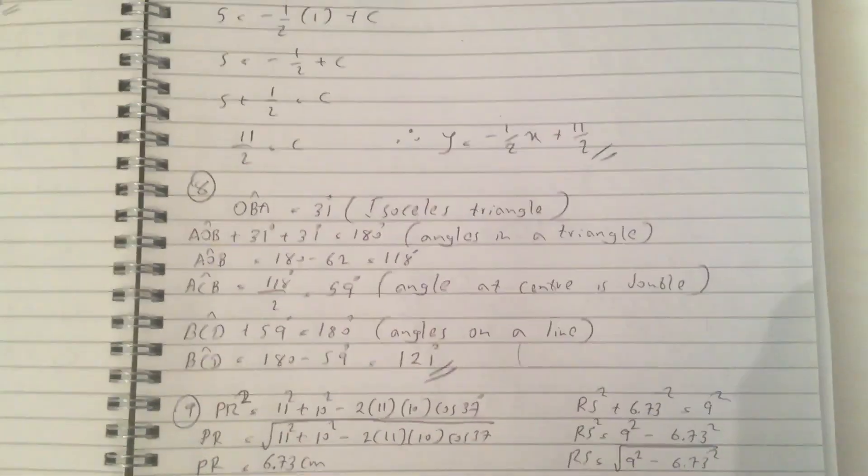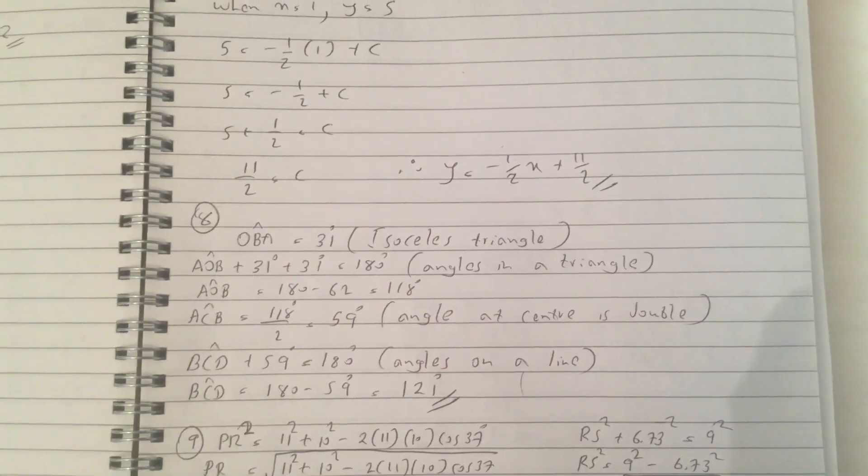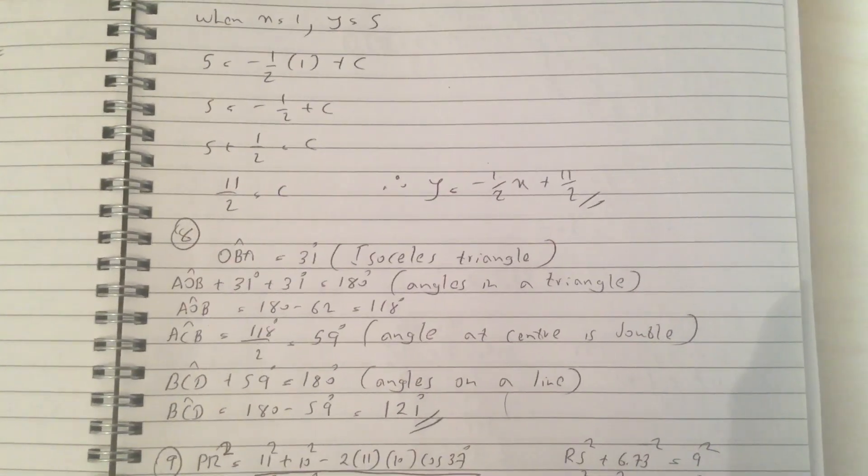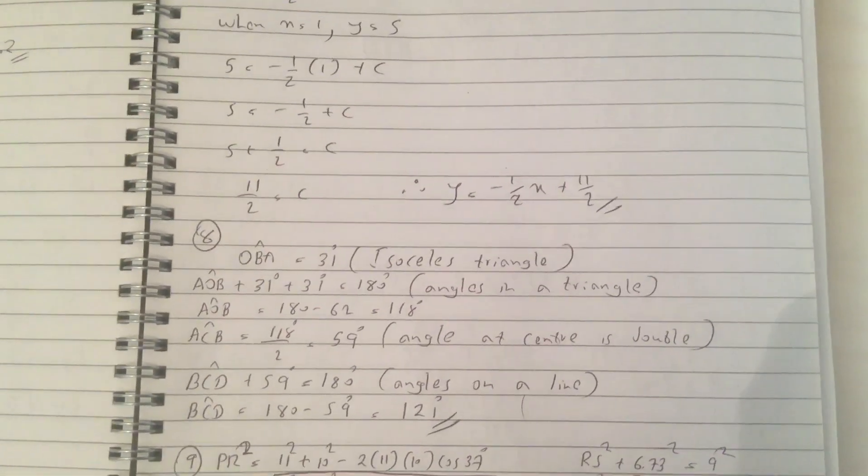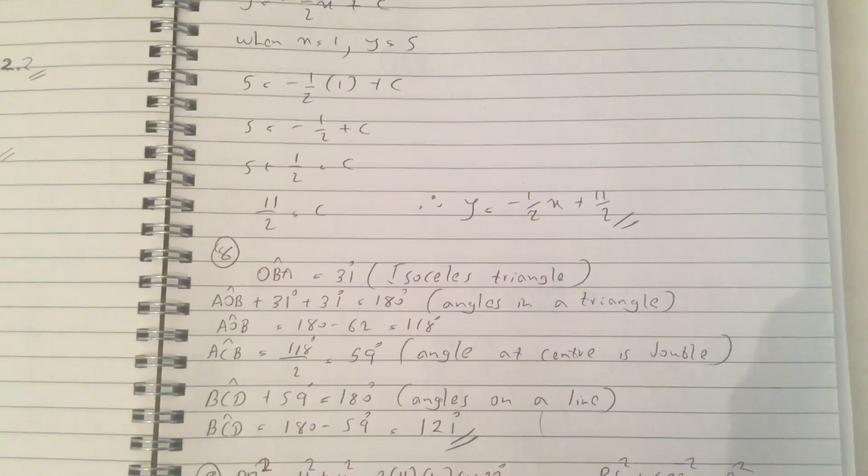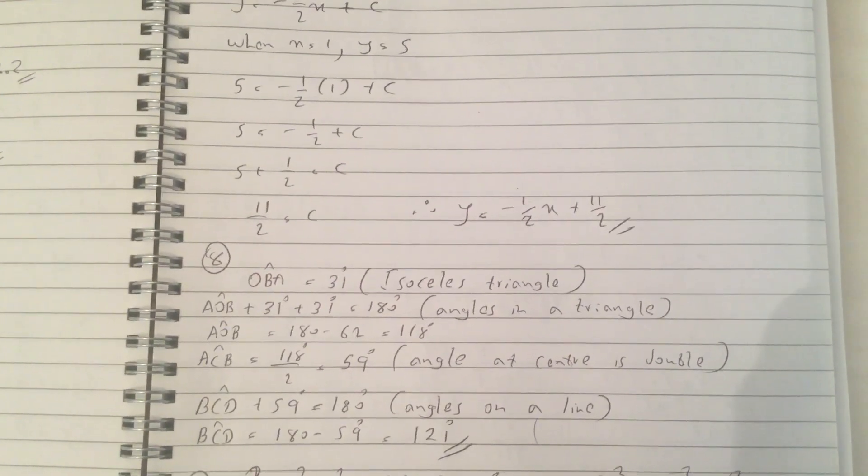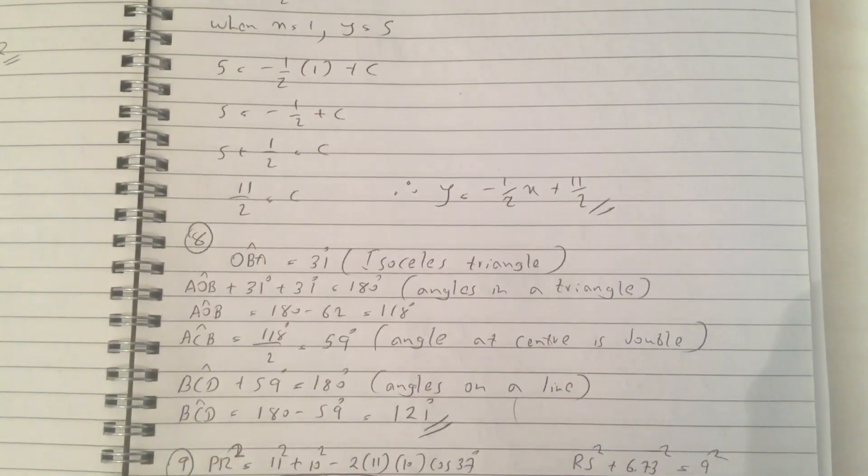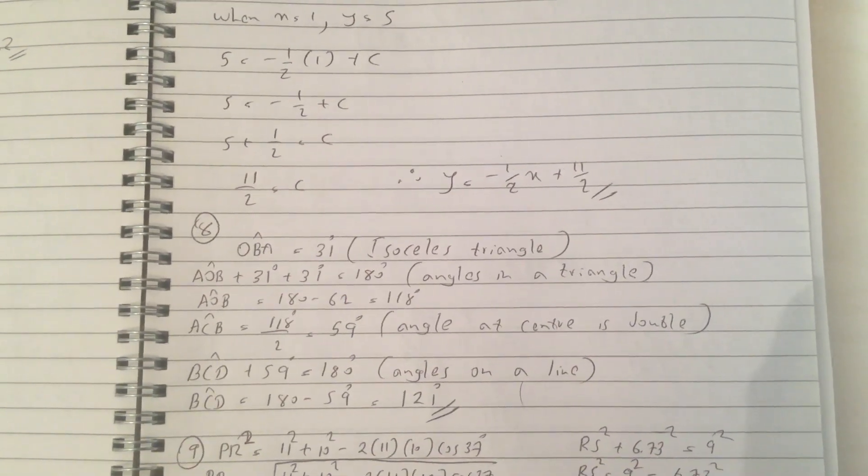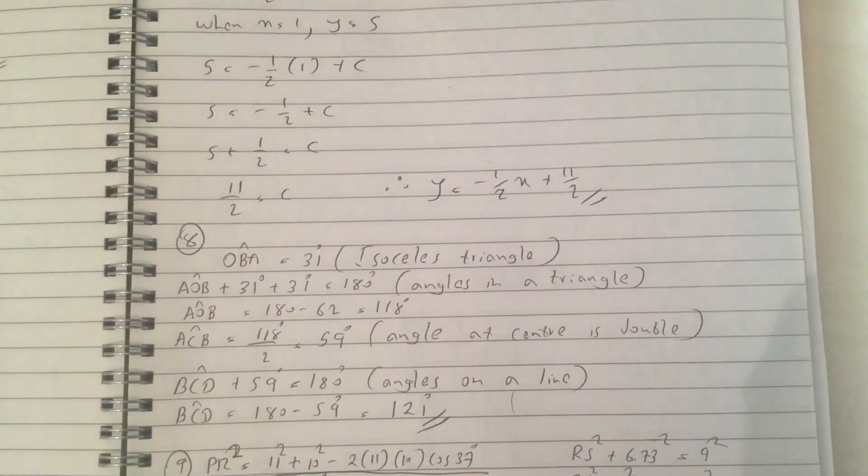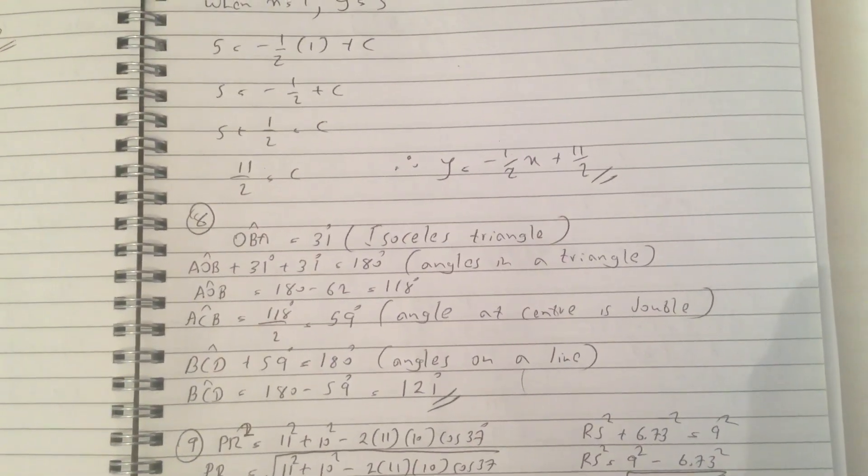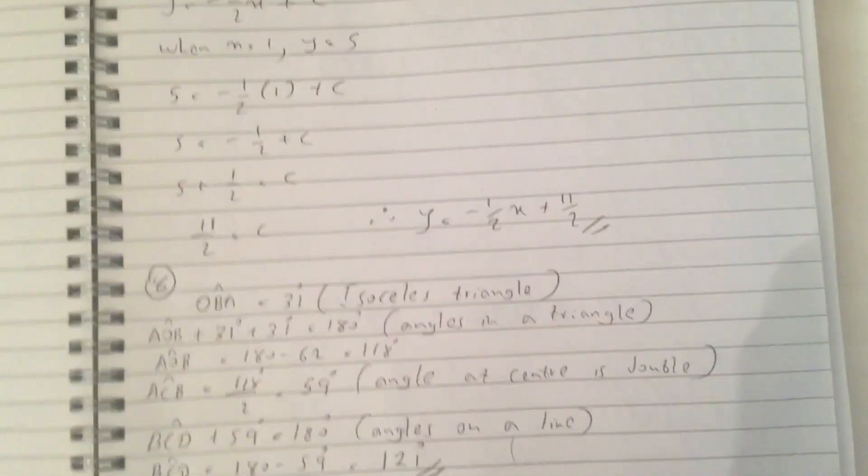Question 8 is a circle theorem question. The angle OBA equals 31 because it's an isosceles triangle, and then AOB plus 31 plus 31 is 180 because the angles in a triangle. AOB is 118. So ACB is 59 because the angle at the centre is double, and BCD plus 59 equals 180 because the angles on a line. BCD equals 180 minus 59, which is 121.